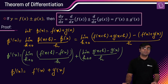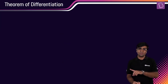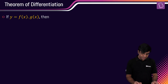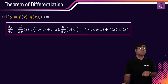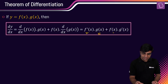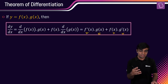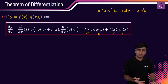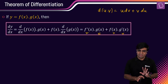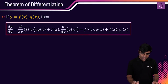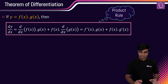It becomes really interesting with the product rule — u·v, or f(x)·g(x). The product rule says: d/dx of f(x)·g(x) = f'(x)·g(x) + f(x)·g'(x), i.e., first × derivative of second + second × derivative of first. You can also remember it as u·dv + v·du. This rule is called the product rule.